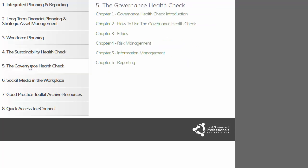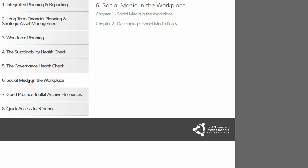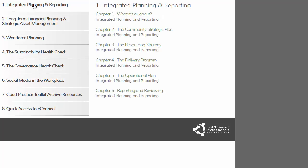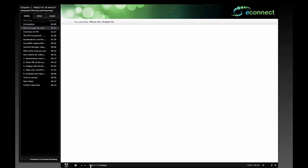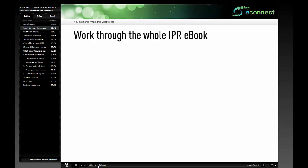The e-books are structured for self-paced learning, allowing the user to progress through the chapters in a linear fashion to gain an in-depth understanding of the topic, or to move about the e-book selecting the information which is most important for them. Chapter 1 is titled 'What's It All About?', and at a minimum, you would want all of your new starters, both staff and counsellors, to be familiar with this chapter. Let's take a look.